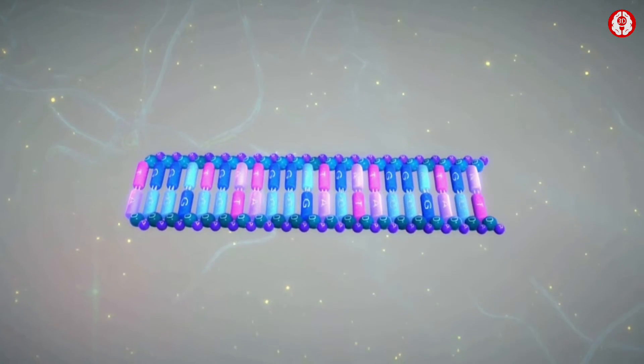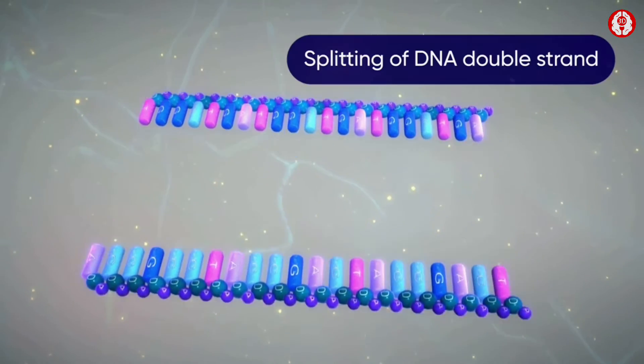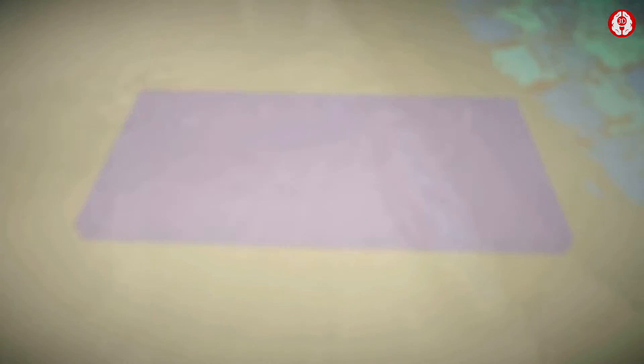Now soak the gel in an alkali. This leads to the denaturation of the double-stranded DNA to its single-stranded form.